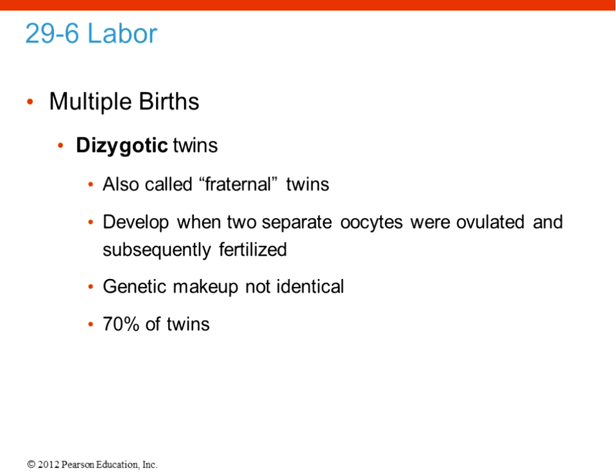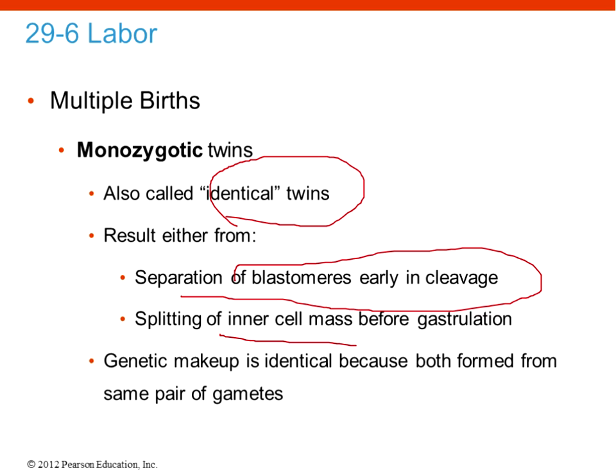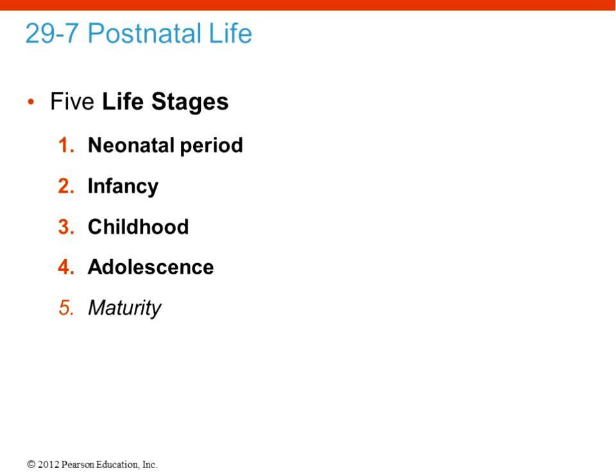There are also multiple births of different types. Dizygotic twins — also called fraternal twins — develop when two separate oocytes were ovulated and fertilized, so the genetic makeup is not identical. About 70% of twins are dizygotic or fraternal. Monozygotic twins — identical twins — result typically from separation of the blastomeres early in cleavage or splitting of the inner cell mass, where the embryo divides. Since they came from one gamete, the genetic makeup is identical, though they are two separate individuals forming.